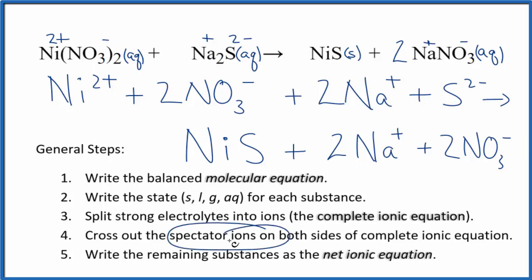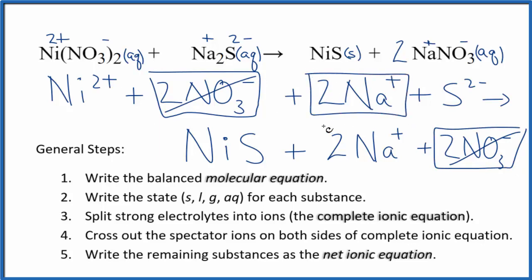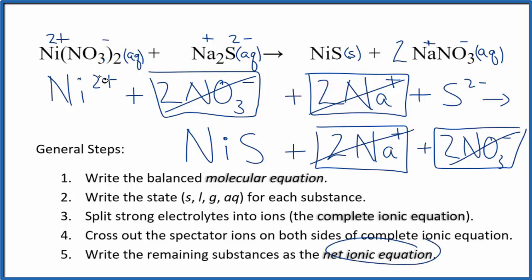Now we can cross out the spectator ions — they appear on both sides. We have 2 nitrate ions in the reactants and 2 nitrate ions in the products; those are spectator ions, cross them out. 2 sodium ions on each side — spectator ions, cross them out. What's left is the net ionic equation for Ni(NO3)2 plus Na2S. I'll clean it up and write the states to get our net ionic equation.